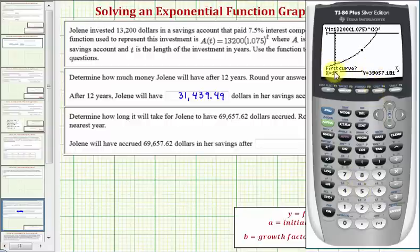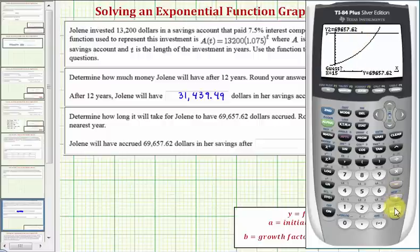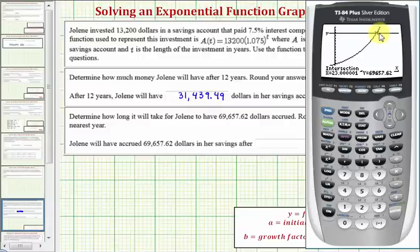And now it's asking for the first curve. We'll press enter. It's asking for the second curve. We'll press enter. When it says guess, we could move the cursor closer to the point of intersection like I am now, but we don't have to. Once it's close, I'll go ahead and press enter again.